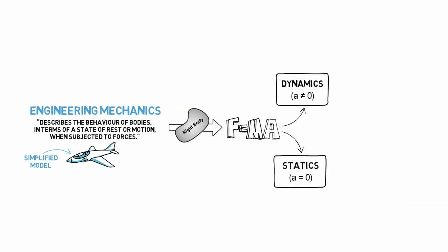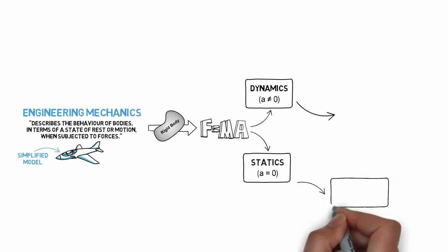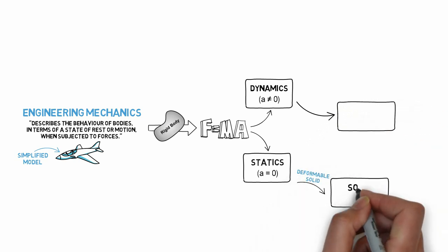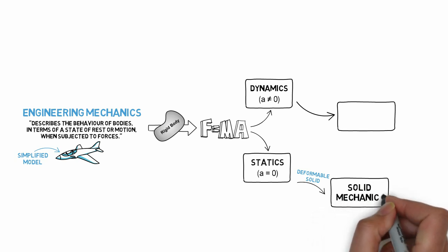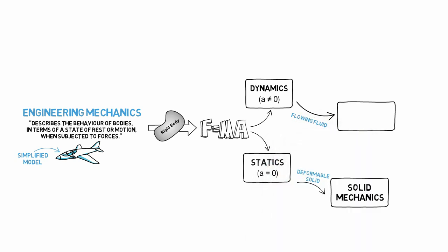However, as you will learn, it is not always appropriate to model bodies as rigid objects. Sometimes we have to consider how the material within the body behaves. We introduce the deformation behavior of solid materials in the course solid mechanics, sometimes also referred to as mechanics of materials. Fluids also behave differently than solids, so we examine appropriate methods to model fluid motion in the course fluid mechanics.